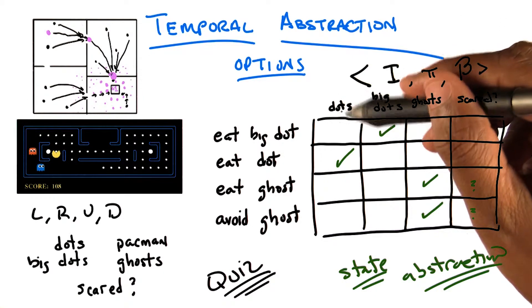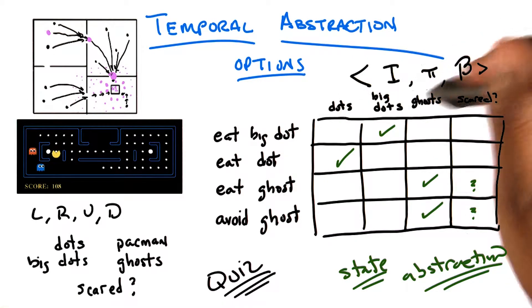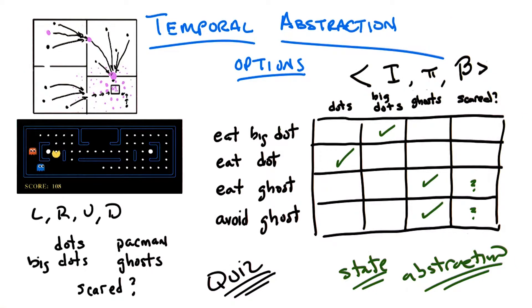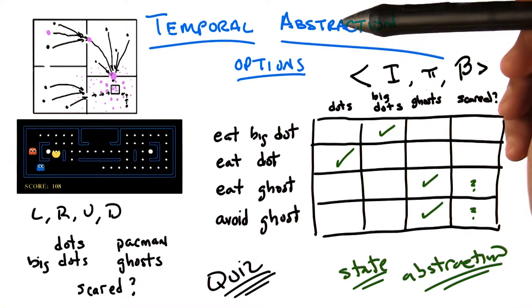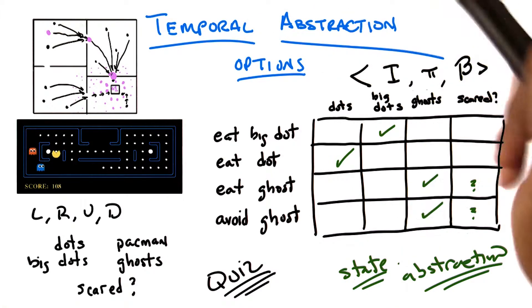Where the dots are don't matter, then the problem of learning this policy, learning this option actually becomes easier, both from a planning point of view and from a learning point of view. So it's as if the state space gets smaller. Right, so temporal abstraction doesn't just buy us temporal abstraction, it buys us state abstraction.